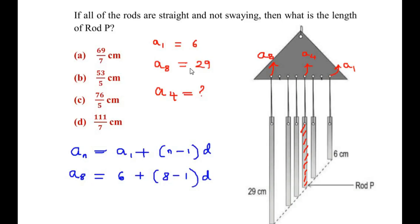Now A8 is the length of the 8th rod, so it is going to be 29 is equal to 6 plus, 8 minus 1 is 7, D.